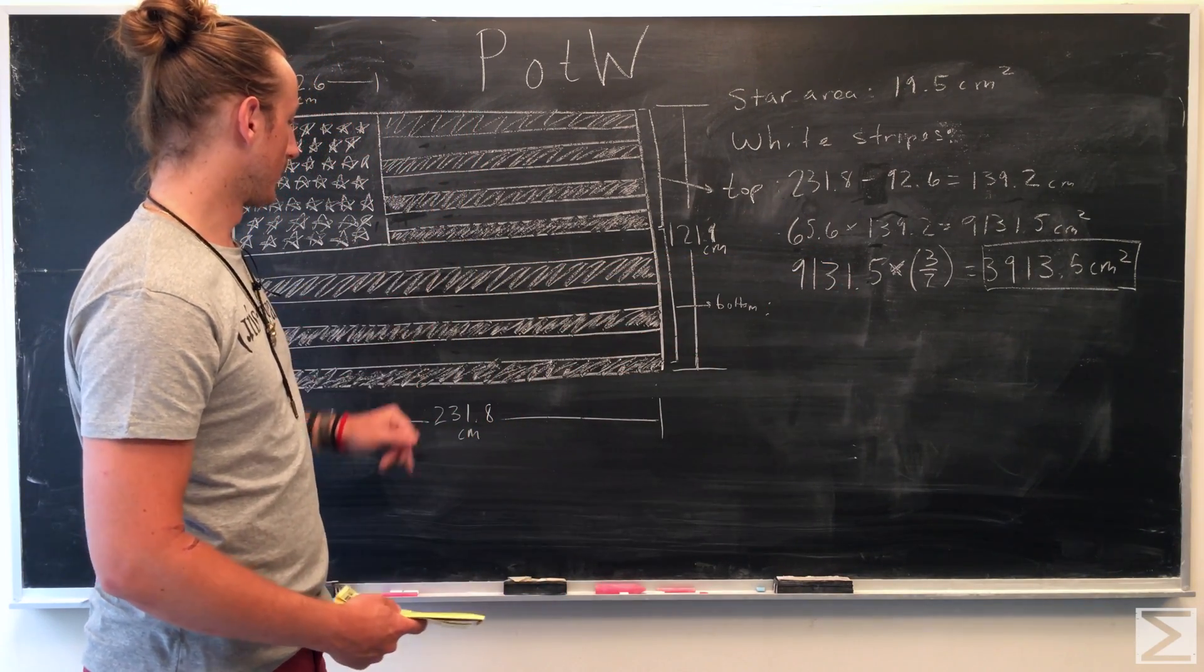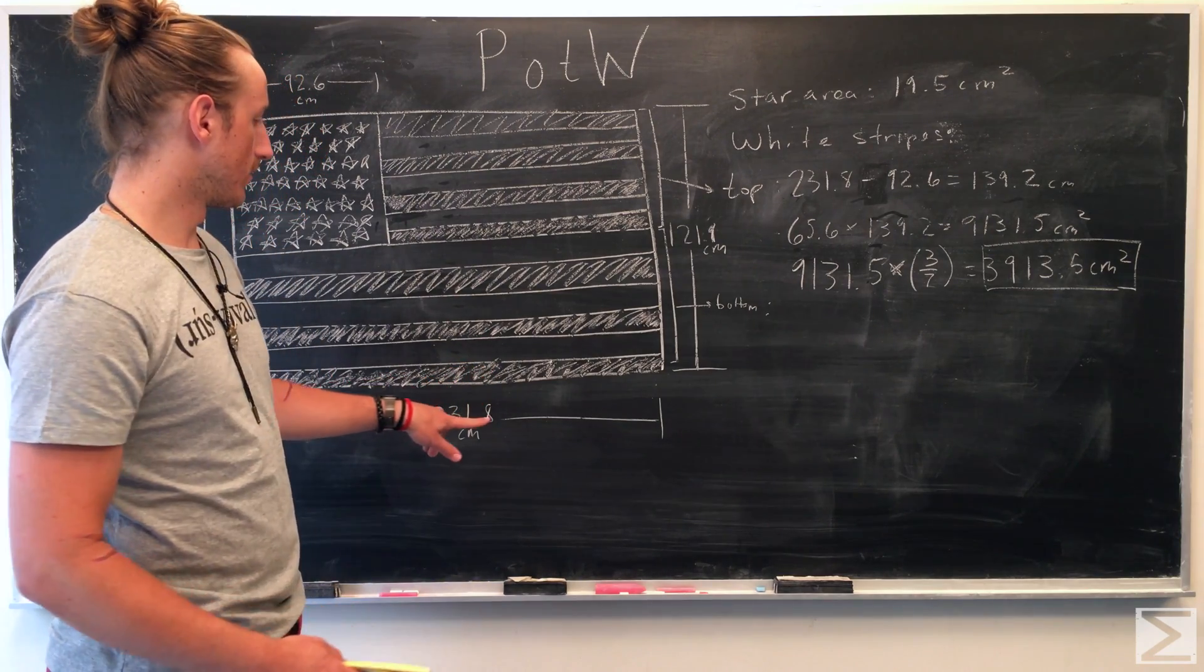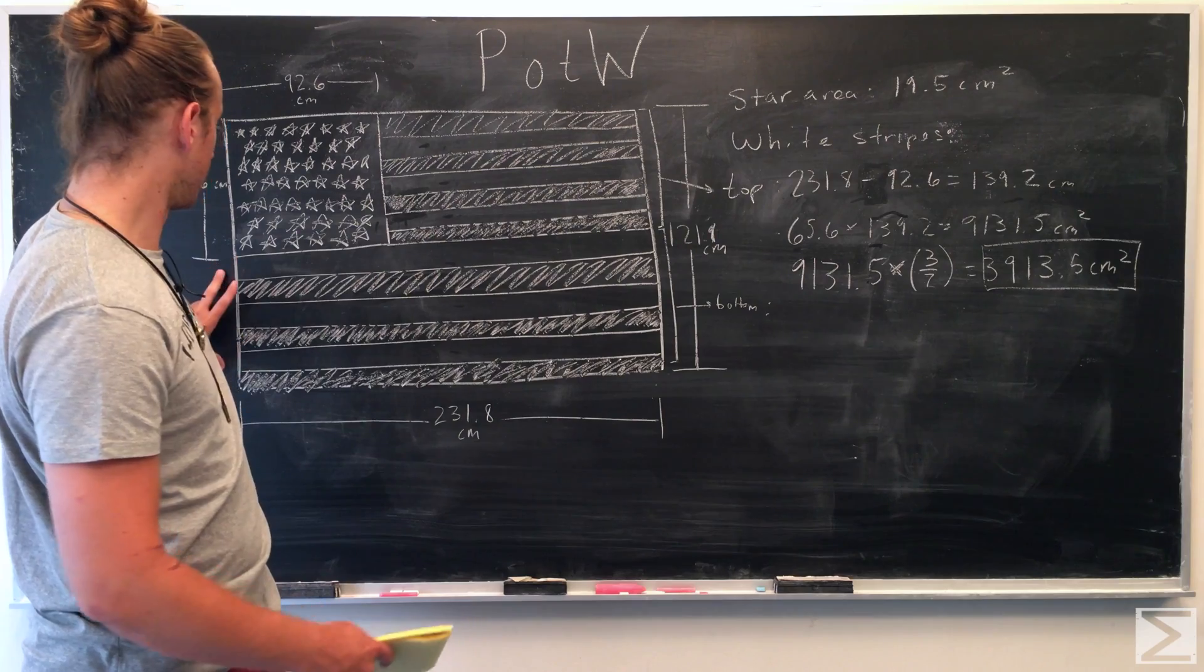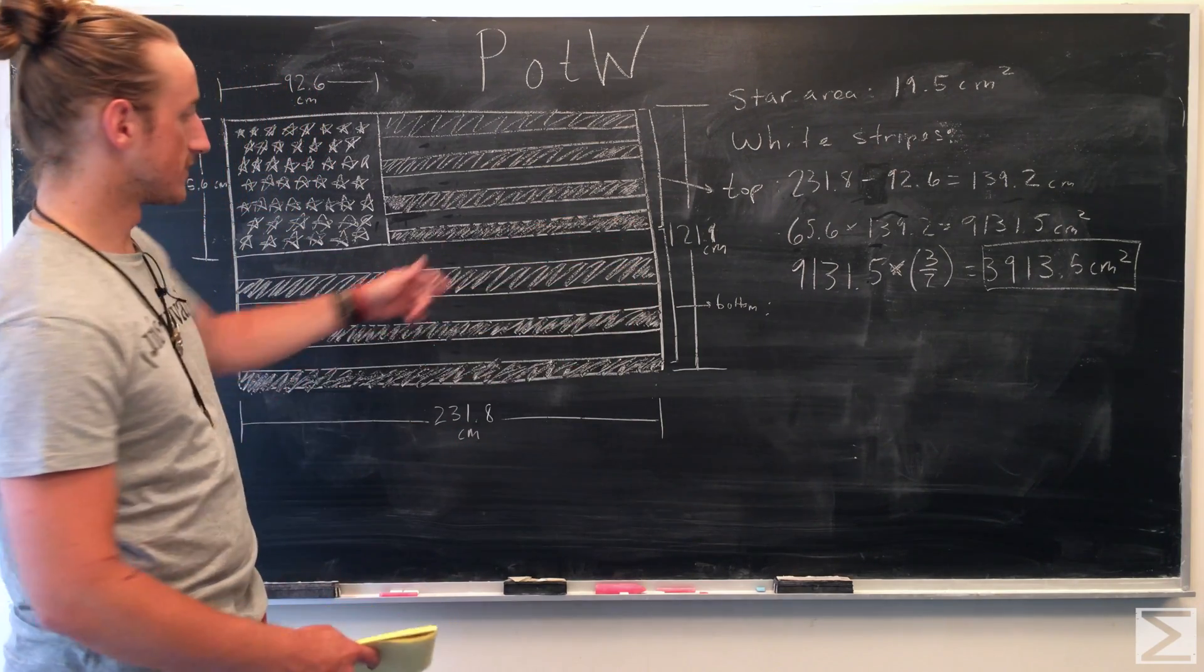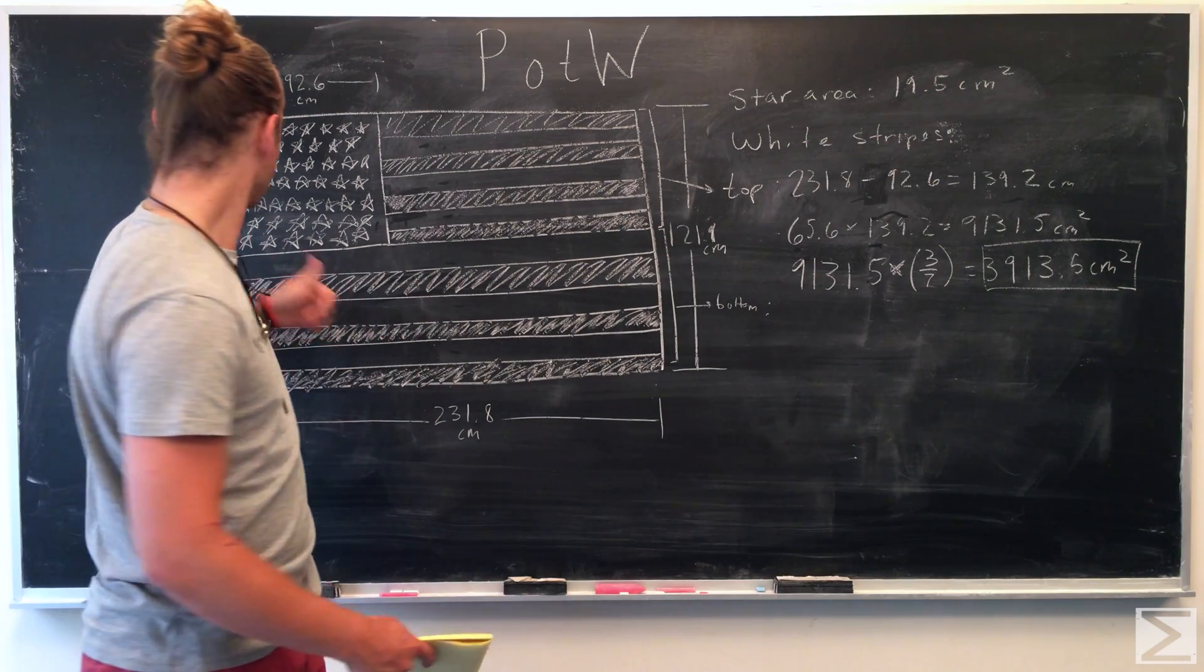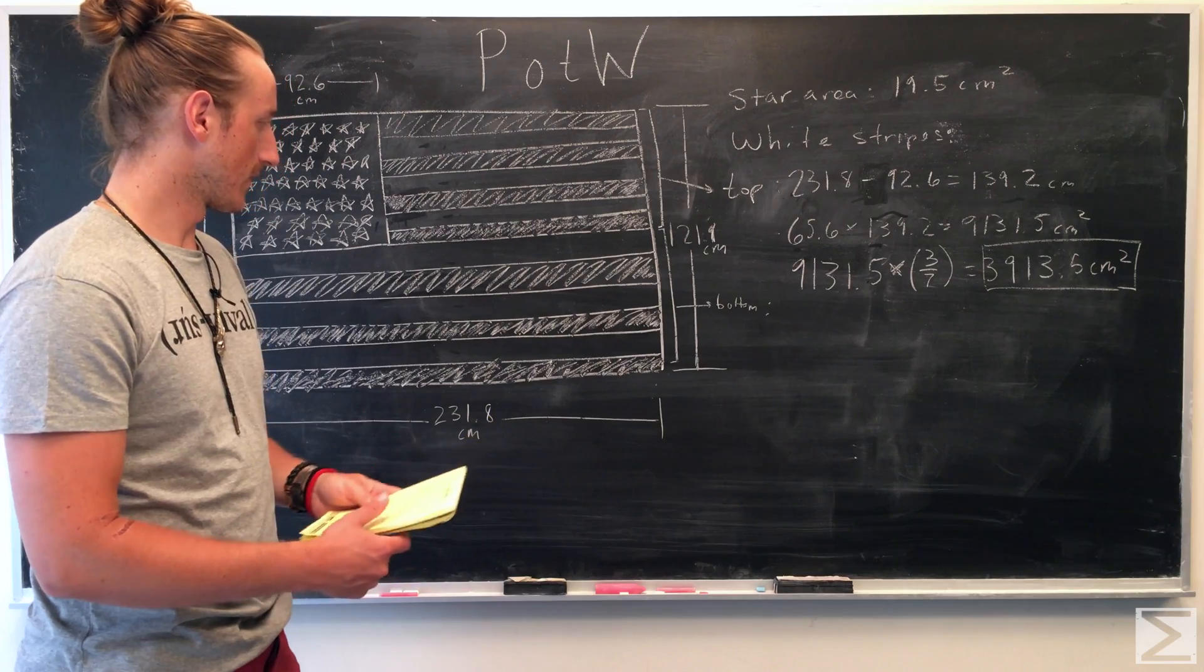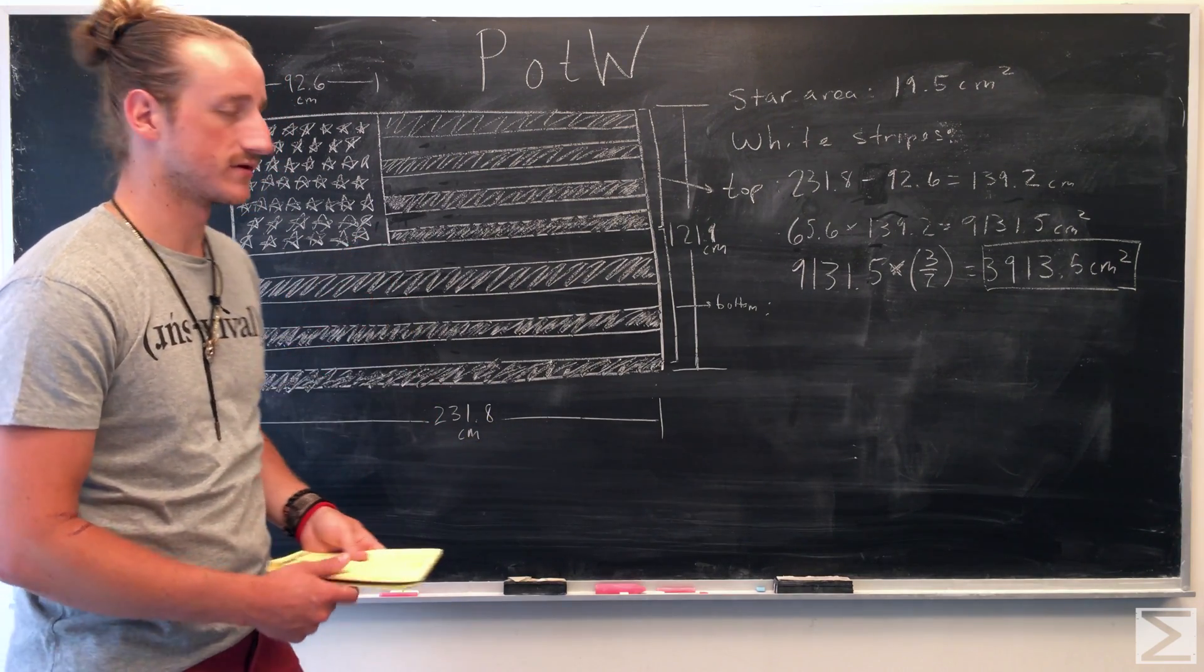Now we'll have to look at the bottom part, which is a little bit easier. We know the whole base, and this is easy to find, just the height of the bottom, which is 121.9 subtracted by 65.6. We know there's six stripes here and three of them are white, so we'll just take half of that.